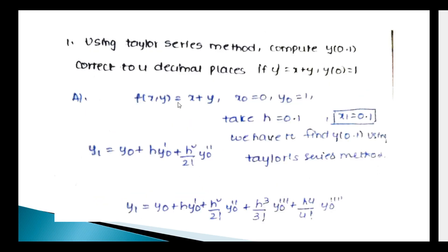First problem: Using the Taylor series method, compute y(0.1) correct to 4 decimal places if y' = x + y and y(0) = 1. So here dy/dx = f(x, y), where f(x, y) = x + y. We need to find y at x = 0.1. Here x₀ = 0, y₀ = 1, and h = 0.1.